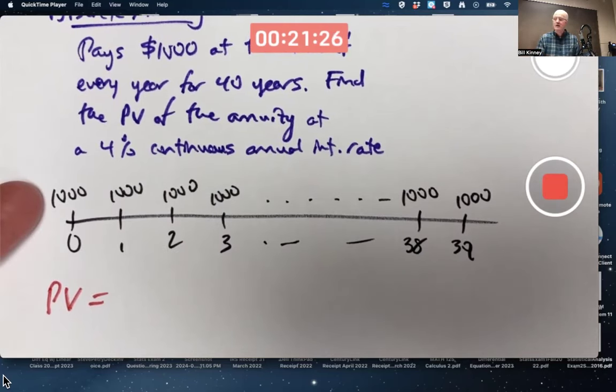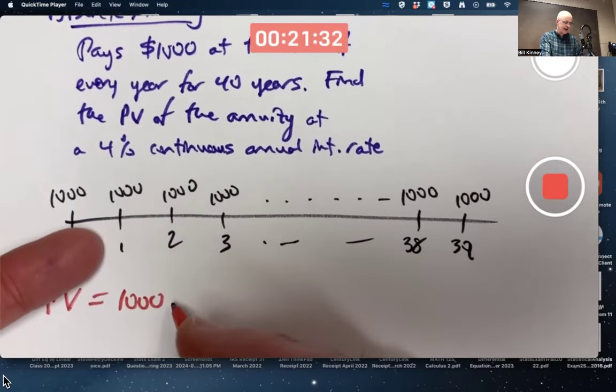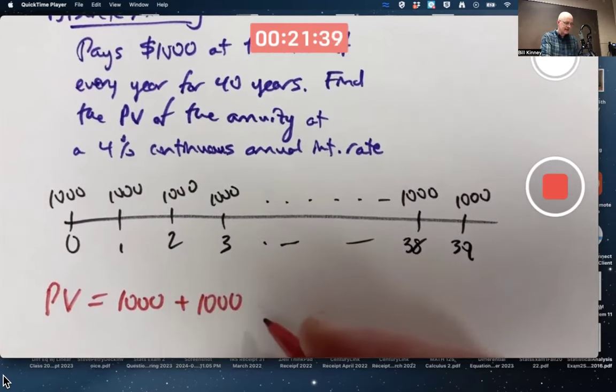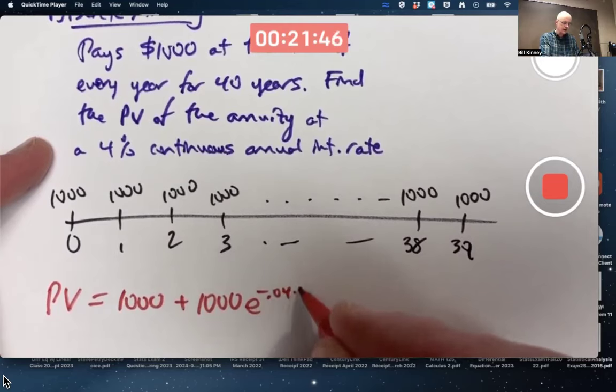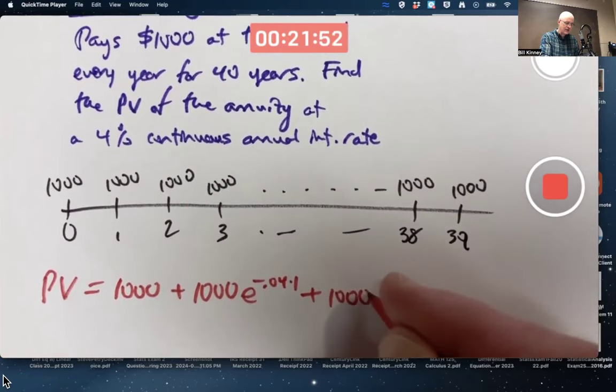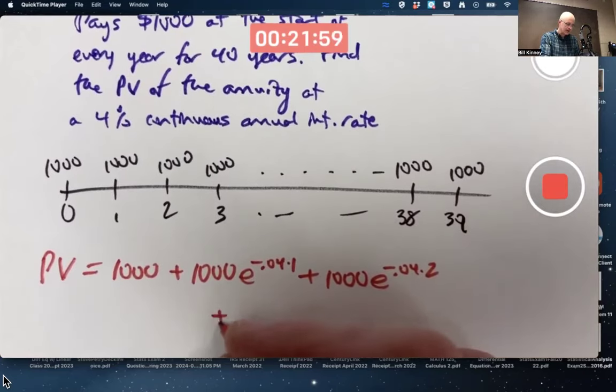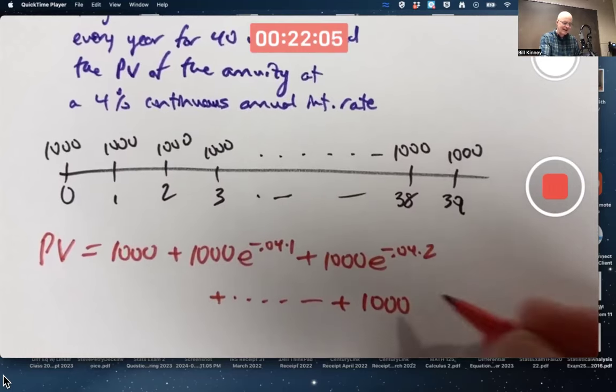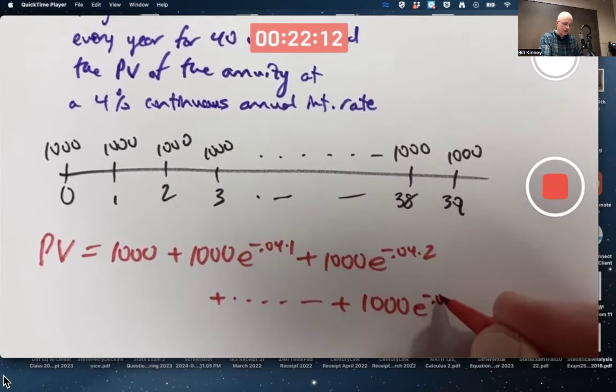The first payment's already at time zero, so its present value is itself. Second payment is time one, one year in the future. What's the present value here at time zero? Because of the continuous interest rate, I use E. It's going to be E to the negative 0.04 times one year. The next one at time two needs to come back in time by two years. Multiply 1,000 by E to the negative 0.04 times two. Et cetera. Keep going. The very last payment of $1,000 is at time 39. It's time 39, but it's the 40th payment. Multiply 1,000 by E to the negative 0.04 times 39.